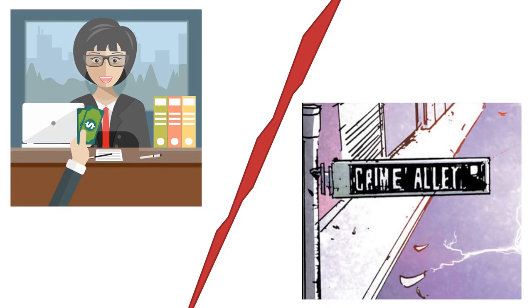In our day-to-day life, location is a good indicator of security. For example, we happily leave our money at a banking center, but we wouldn't leave it on a street corner. Unfortunately, extending this principle to our digital life is not that simple.